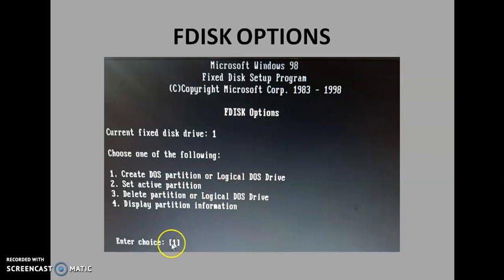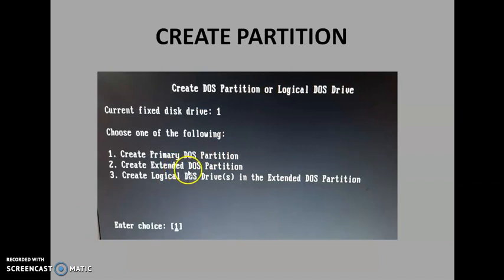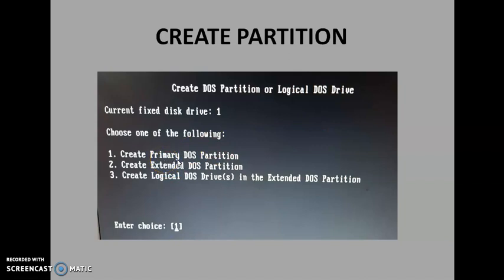To enter this option, just press 1 and press enter. You will be taken to this menu where you can see the create partition options. There are three options: number one is create primary partition, second one is create extended partition, and third one is to create logical partition drives within extended partition. You need to have a minimum of one primary partition — a partition which holds the bootable files or operating system files.